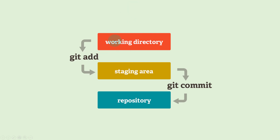Now, when you change some file, when you do some modification, then you add those files to the git staging area. When you fire the command git add — which means before committing — you push those modified files or untracked files to your staging area. You can say git add --all or git add dot to add all the modified and untracked files to the staging area, or you can specify a particular file name. When you perform git add, the file from your working directory goes to the staging area.